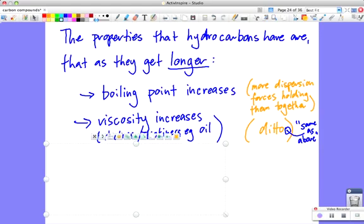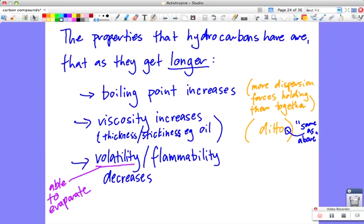As hydrocarbons get longer, their volatility, flammability, decreases. So what's that saying? That's saying that their ability to evaporate and be flammable actually decreases. And why does that happen? Ditto. More dispersion. So the opposite of that means things that are really short, hydrocarbons that are short, have all the opposite.